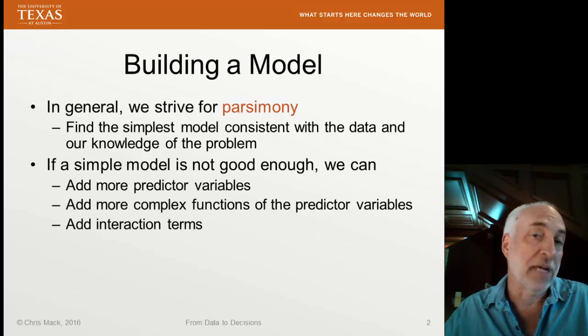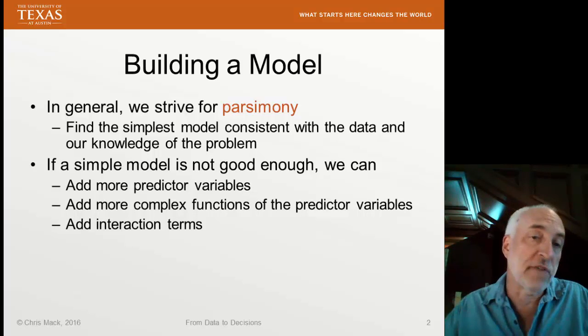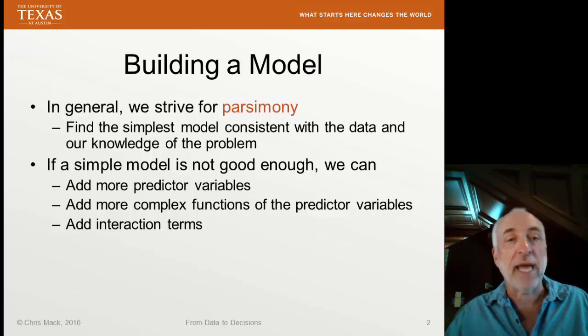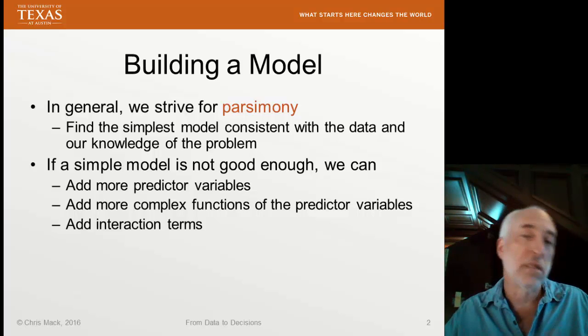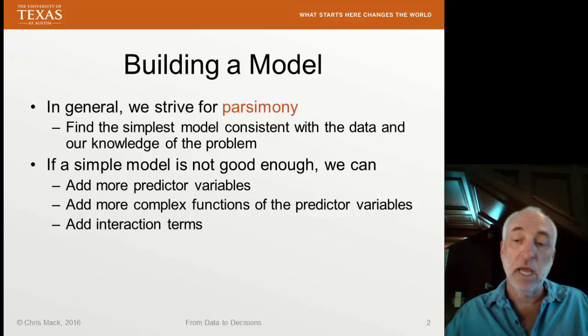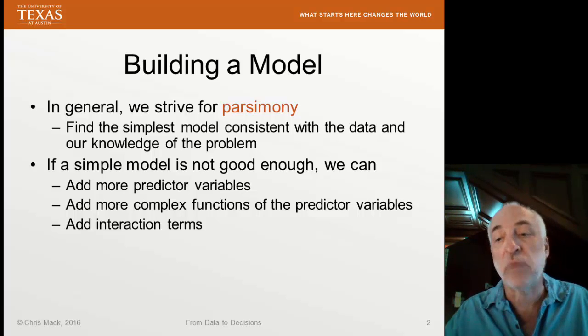But sometimes a simple model is not good enough. So we add more predictive variables, we add more complex functions of the predictive variables, we add interaction terms. So that model can become, with just a few different variables, extremely complicated. And then you start adding five or ten different predictor variables and the number of possible combinations is tremendous.